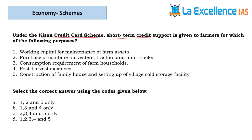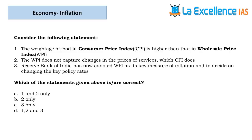The next question is about the Kisan Credit Card scheme — remember it is short-term credit. Statement 1 — working capital for maintenance of farm assets; yes, it is used for day-to-day operational costs, not asset building. Statement 2 — purchase of combine harvesters, tractors, and mini trucks; the cost of this is very high, and Kisan Credit Card will not cover such large capital purchases. When statement 2 is eliminated, the answer is B.